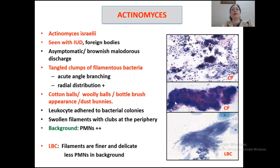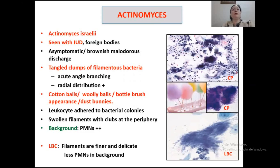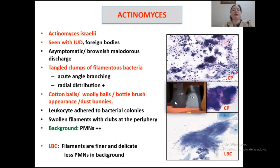Patients are usually asymptomatic or may have malodorous brownish discharge. Pain, if present, usually indicates PID or invasive infection. Actinomyces is a gram-positive, non-acid-fast, acute-angle-branching, delicate filamentous bacteria living symbiotically with bacterial colonies, forming a characteristic fuzzy dark blue mass resembling cotton balls, woolly balls, bottle brush, or dust bunnies. Many neutrophils adhere to swollen filaments at the periphery. In LBC, the filaments appear more fine and delicate with fewer polymorphonuclear cells in the background.